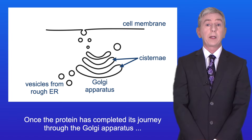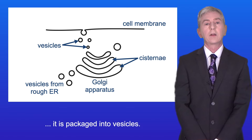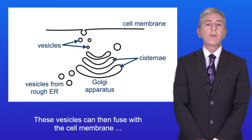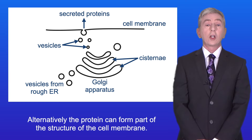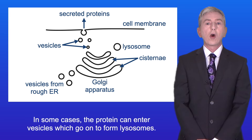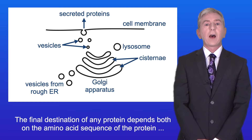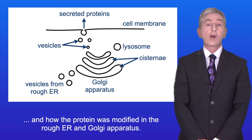Once the protein has completed its journey through the Golgi apparatus it's packaged into vesicles. These vesicles can then fuse with the cell membrane and the protein can be secreted from the cell. Alternatively, the protein can form part of the structure of the cell membrane, and in some cases the protein can enter vesicles which go on to form lysosomes. The final destination of any protein depends both on the amino acid sequence of the protein and how the protein was modified in the rough ER and Golgi apparatus.